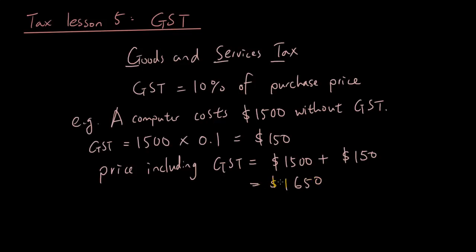So price including the GST will be $1,500 plus the $150 of GST and that will be $1,650. And that's the money that you have to pay to the shop. And what happens is the shop takes your money and then the shop passes the $150 onto the government.